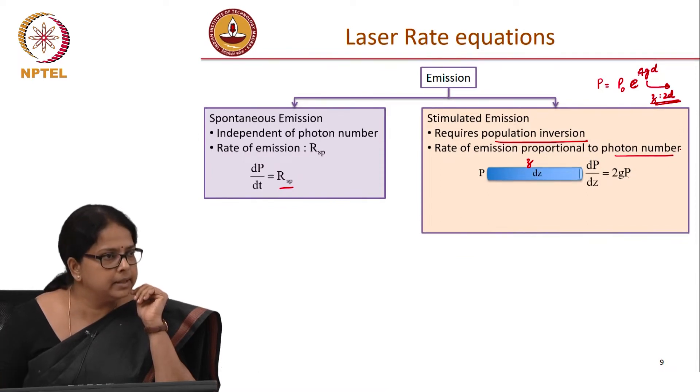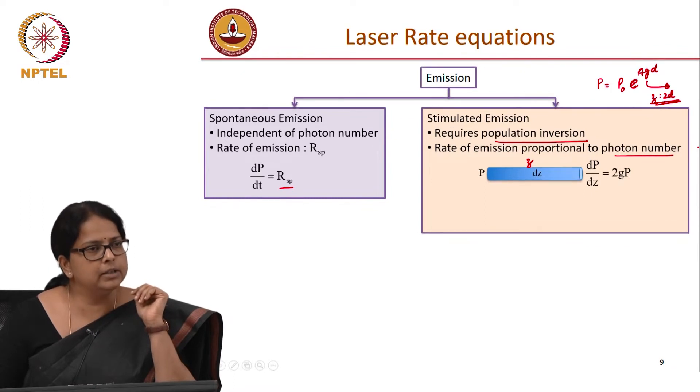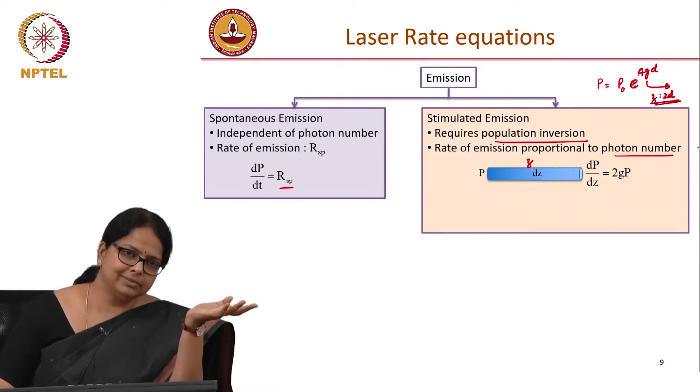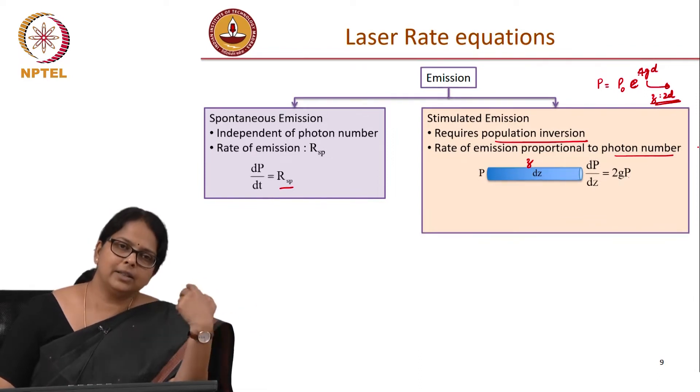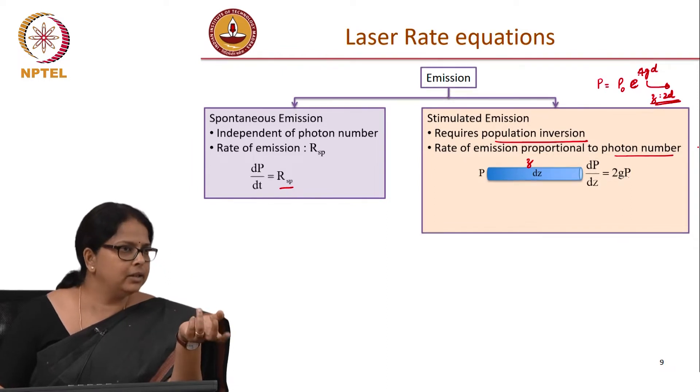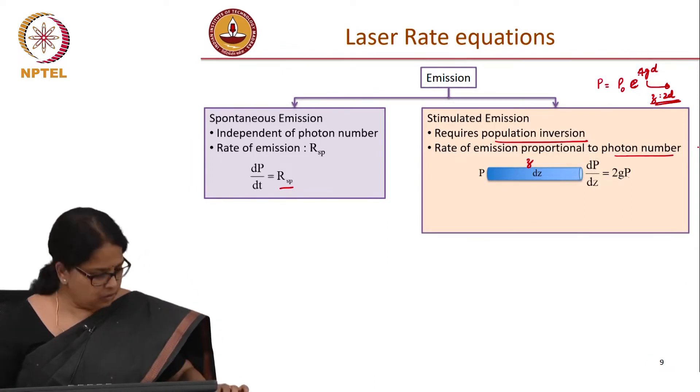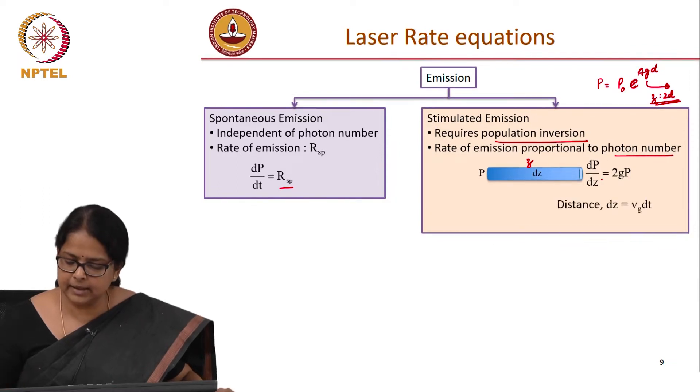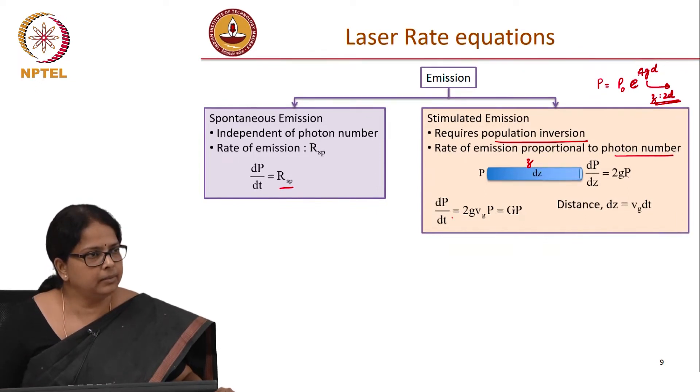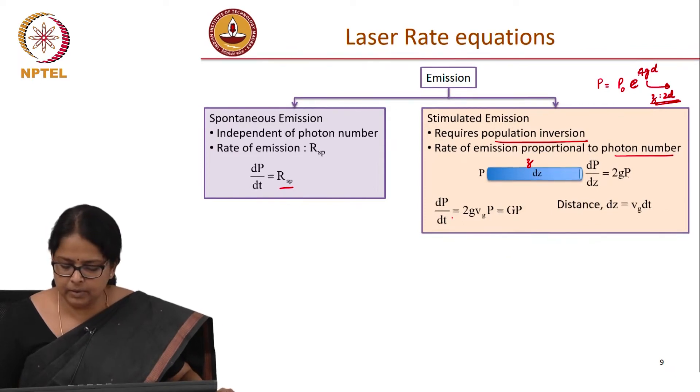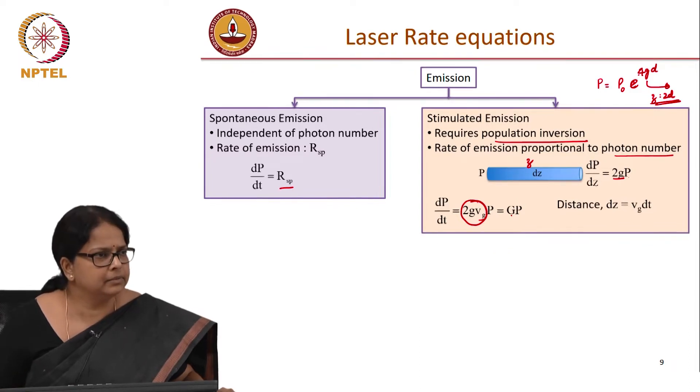But do you want time? So how do you convert this into time? Like how we argued earlier, we say related through the velocity. And again with velocity, you have to consider group velocity and not c. So I can just write this distance dZ as Vg into dt and then I can substitute as Vg into dt. Vg is a constant. So I get it as a dP by dt equation. So I get it as dP by dt is equal to 2gVg and then there is P and I am going to call this 2gVg as capital G, just as a notation.